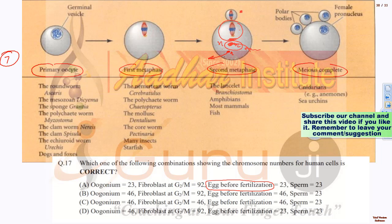Just before fertilization — before the pronuclei fuse — the egg at metaphase II has 2N chromosomes, which is 46. That gives 46 for the egg before fertilization. Combined with 46 for the fibroblast at G2/M and 23 for the sperm, this supports answer C as the correct choice.